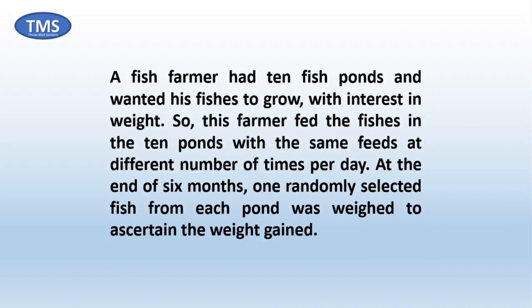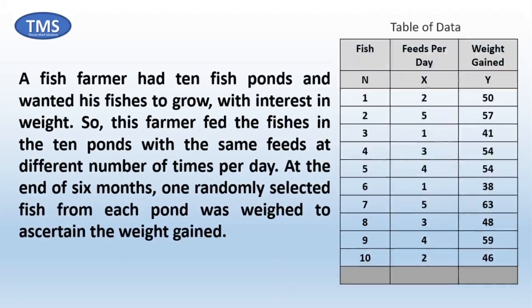Let's assume a fish farmer had 10 fish ponds and wanted his fishes to grow. This farmer fed the fishes in the 10 ponds with the same feeds at different number of times per day. At the end of 6 months, one randomly selected fish from each pond was weighed to ascertain the weight gained. The records of the feeds per day and the weight gained are given in a table of data, where n is the number of fish, x is the feeds per day, and y is the weight gained by the fishes.